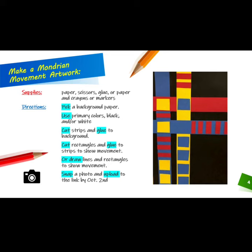You will pick a background paper. Use primary colors, black, and/or white. Cut strips and glue to the background. Cut rectangles and glue to the strips to show movement, or draw lines and rectangles to show movement. You will snap a photo and upload to the link by October 2nd.